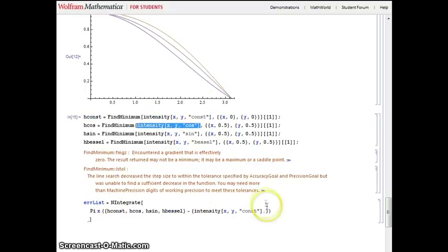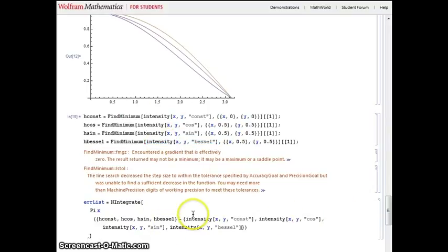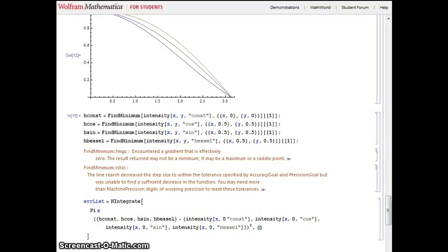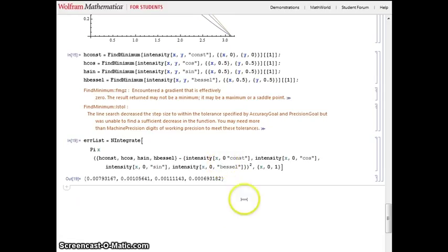So I found the height of that theoretical cylinder by finding the minima for each of the intensity functions. Then I subtracted the volume of the intensity from the volume of the theoretical cylinder, and the square of this difference is the error. Here's a list of the errors, but it will be easier to compare if I make a bar chart.